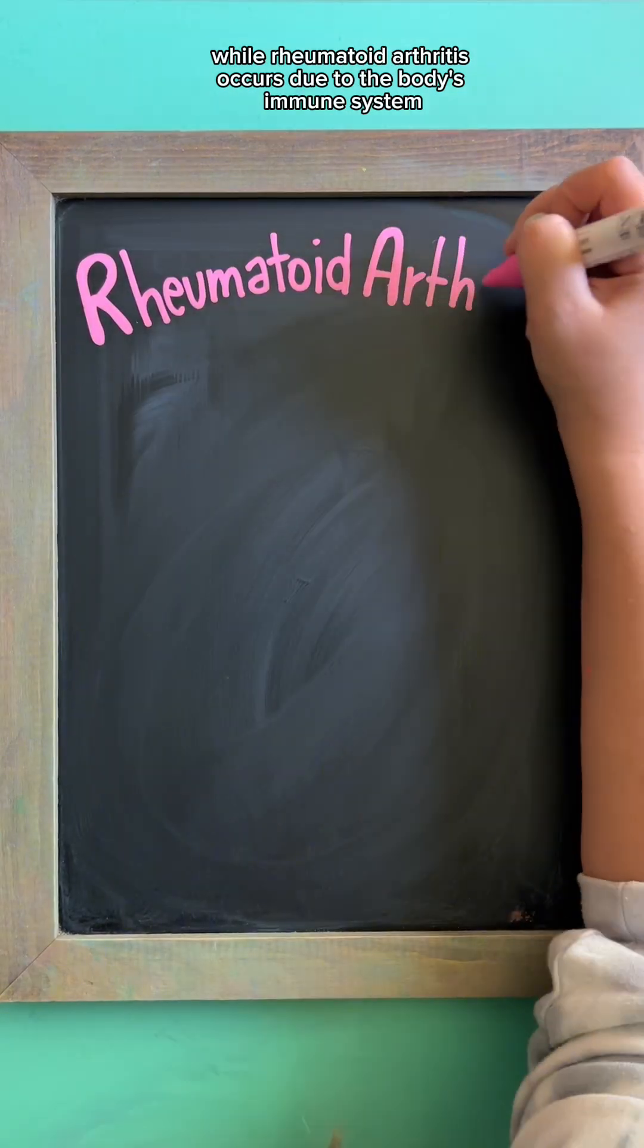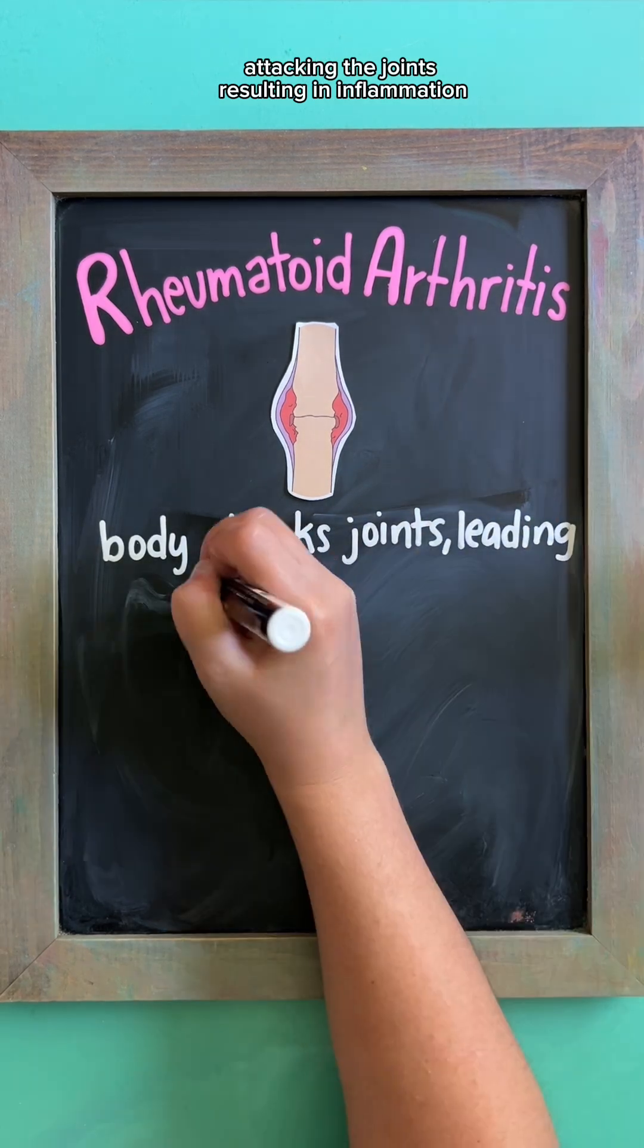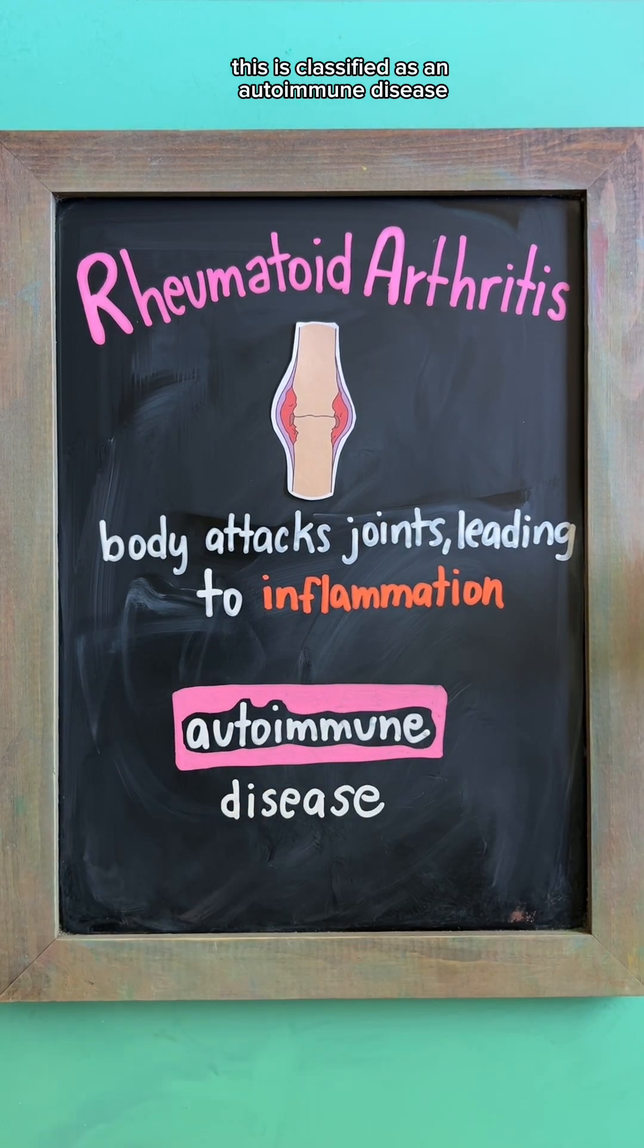While rheumatoid arthritis occurs due to the body's immune system attacking the joints, resulting in inflammation, this is classified as an autoimmune disease.